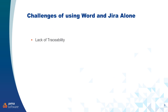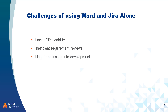With that as a backdrop, we'll jump into the main focus of today's webinar: the challenges of using Word and Jira alone to manage requirements. The first issue is lack of traceability. Word is a flat file with no relationships between requirements, so any attempt at traceability is going to be manual, time-consuming, and prone to error. The next challenge is inefficient requirement reviews — even with track changes in Word, reconciliation of changes from multiple stakeholders takes significant time, and managing participation and tracking feedback is also very difficult. The next challenge is little or no insight into development. Once you approve a BRD, development will go off and start to code, often with no feedback loop back to the requirements — a kind of throw-it-over-the-wall approach.